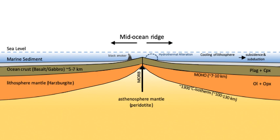Hydrothermal vents are a common feature at oceanic spreading centers. The oceanic crust is made up of rocks much younger than the Earth itself; most oceanic crust in the ocean basins is less than 200 million years old. The crust is in a constant state of renewal at the mid-ocean ridges. Moving away from the mid-ocean ridge, ocean depth progressively increases proportional to the square root of its age. As the oceanic crust moves away from the ridge axis, the peridotite in the underlying mantle cools and becomes more rigid. The crust and the relatively rigid peridotite below it make up the oceanic lithosphere, which sits above the less rigid and viscous asthenosphere.